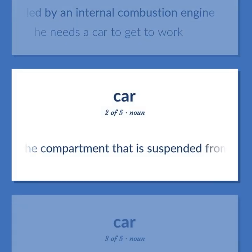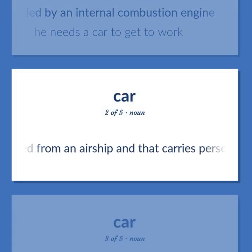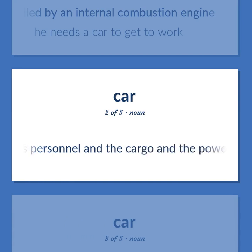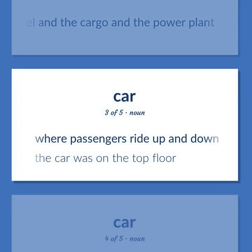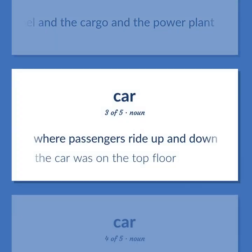CAR: The compartment that is suspended from an airship and that carries personnel, cargo, and the power plant. Where passengers ride up and down. Example: The car was on the top floor.